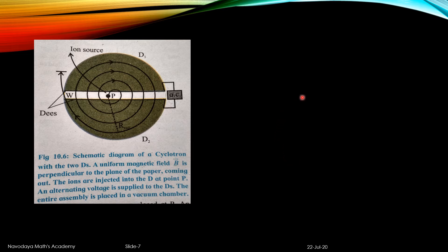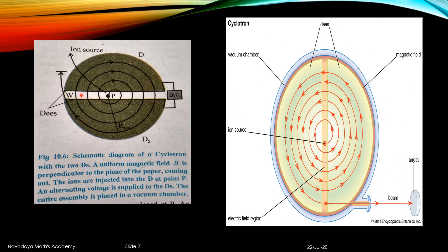As the particle leaves its path due to acceleration from the electric field, the magnetic field acts on it again and it starts making another circle. Then the electric field gives acceleration again, it leaves its path again, and then the magnetic field acts. So continuously, the magnetic field and electric field work on the charge particle. This happens between D1 and D2 — there is a potential difference. Because of this, the ion's radius continuously increases, forming a spiral, and when the radius is maximum, it exits.